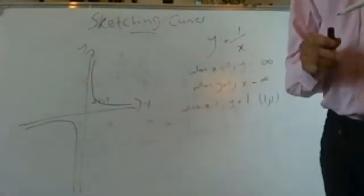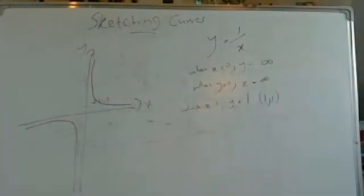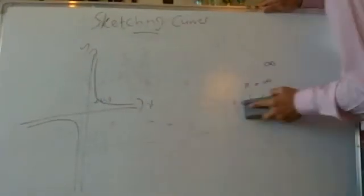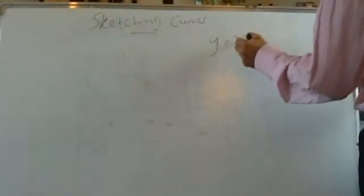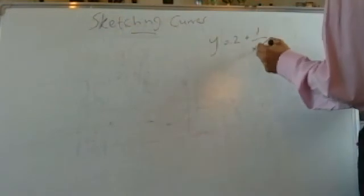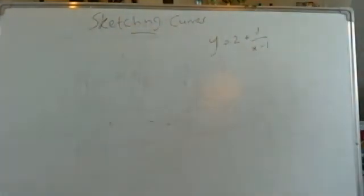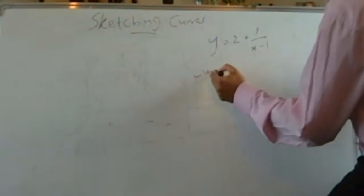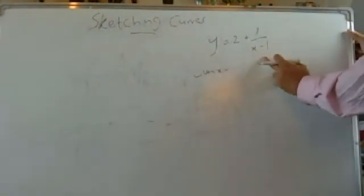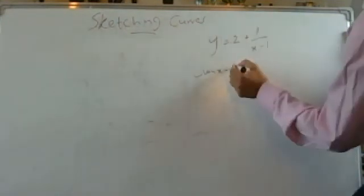Now let's sketch a slightly more complicated version: y equals 2 plus 1 over (x minus 1). To find the asymptotes — if I make x minus 1 equal to 0, so x equals 1, then we get 1 over 0 which is infinity. So when x equals 1, y equals infinity — that's the first asymptote.